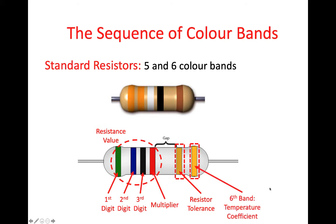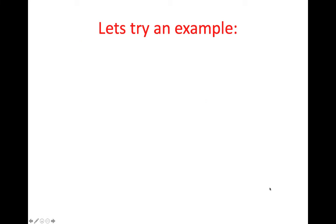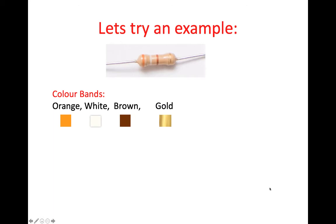With this information, let's try an example. I'm going to show a photo of a resistor, and this is the way the quiz will work towards the end of this presentation. Just in case you can't make out the colours, I will provide the colour bands as shown. So in this example we have orange, white, brown, gold. We look at the first band — orange represents the number 3, which is the first digit of the resistance value. The second digit is white, which represents the digit 9.